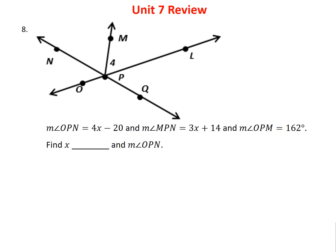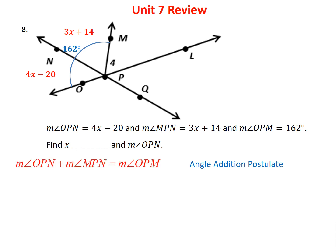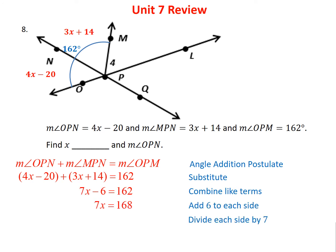Problem 8 uses algebra to find angle values. The measure of angle OPN is 4X - 20 and angle MPN is 3X + 14, and together they equal 162 degrees. By the angle addition postulate: (4X - 20) + (3X + 14) = 162. Combining like terms: 7X - 6 = 162. Add 6 to both sides: 7X = 168. Divide by 7: X = 24. Then angle OPN = 4(24) - 20 = 76 degrees.